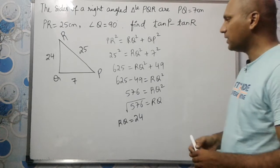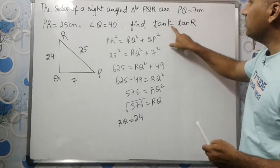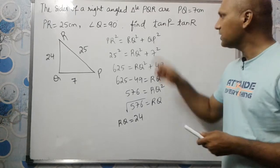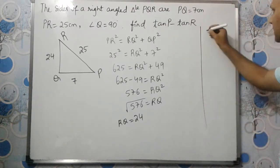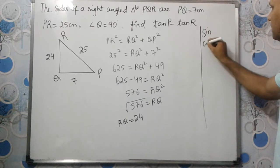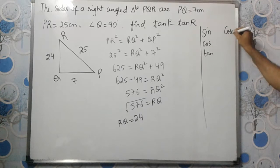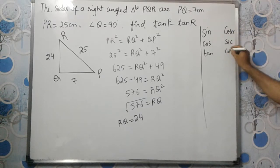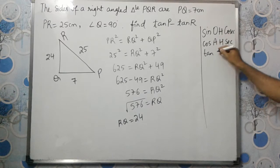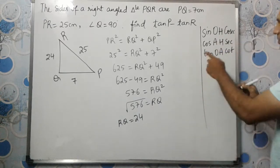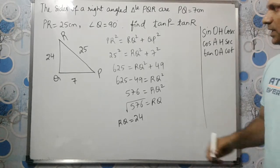Now we need to find tan P minus tan R. What is the tan formula? I told you to remember this, right? Sin, cos, tan, cosecant, secant, cot: old hero and his old acting. So tan is opposite by adjacent.